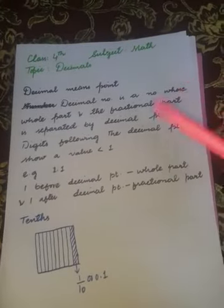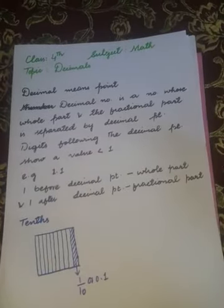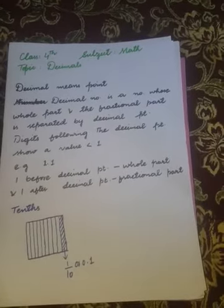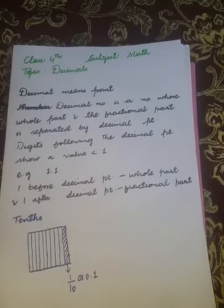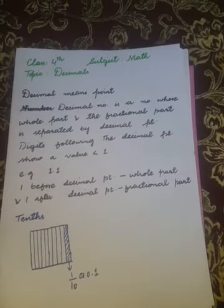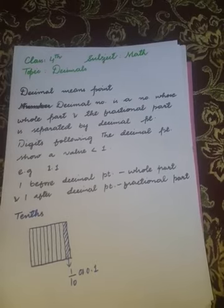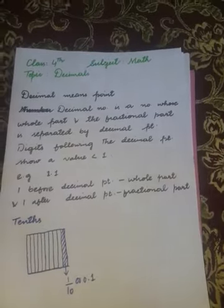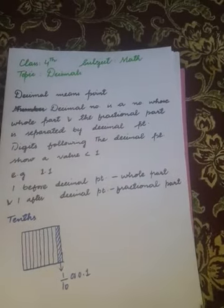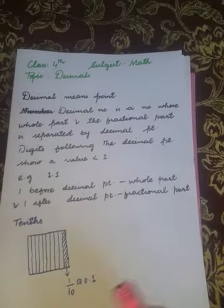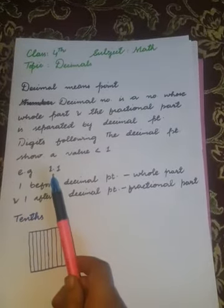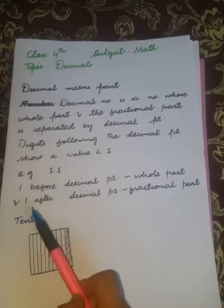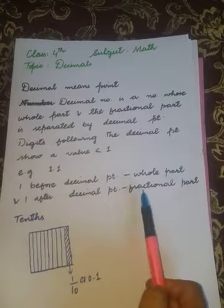Decimal number is a number whose whole part and the fractional part is separated by decimal point. The decimal number has one whole part, decimal point, and fractional part. The digits after the decimal point are less than one. For example, here I will show you 1.1.